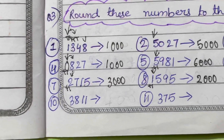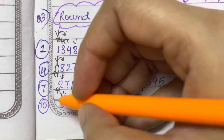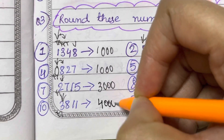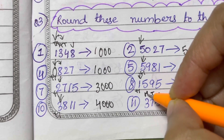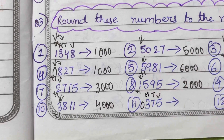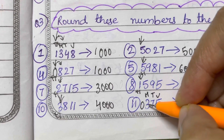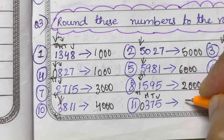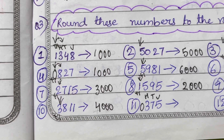Now 3,811. The thousands place is 3, and the digit after that is 8. So we add plus 1 to 3, so it becomes 4,000. Next, 375. This is units, tens, and hundreds — the thousands place is 0. We check the digit after that: it's 3, so 0 is unchanged, and the answer is 0,000.